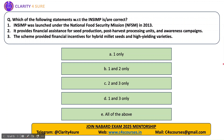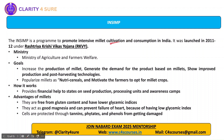Next question: which of the following statements with respect to INSIMP is or are correct? INSIMP stands for Initiative for Nutritional Security through Intensive Millet Promotion. INSIMP was launched under National Food Security Mission in 2013. It provides financial assistance for seed production, post-harvest processing units, and awareness campaigns. The scheme provided financial incentives for hybrid millet seeds and high-yielding varieties. Here statements 2 and 3 are correct. Statement 1 is incorrect because INSIMP was not launched under NFSM but was launched under RKVY.